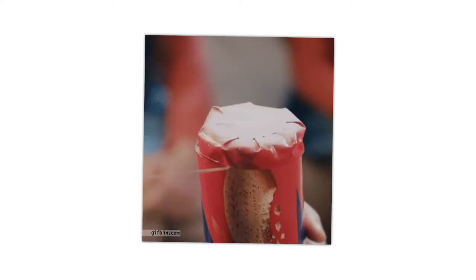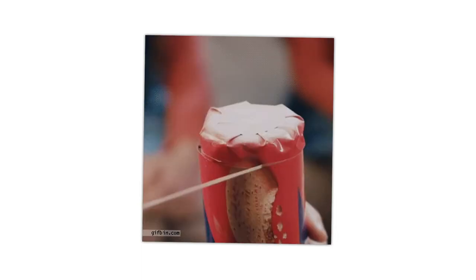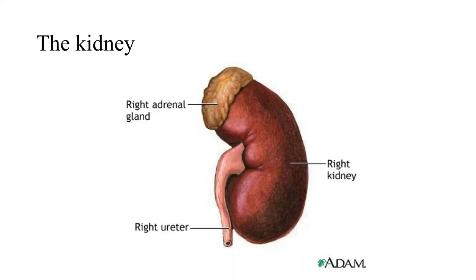Hello everybody - here is a lovely diagram to look at before we start learning about the kidney. So here we can see the kidney; this is the right one, very similar to the left. Just pop your hands on your back just above your pelvis and that's where your kidneys are. They are very rich in blood and they've got the adrenal glands sat on top, which releases adrenaline - totally separate function to the kidneys. Then we can see the ureter coming out of the bottom, leading down to the bladder. Once urine has been produced by the kidneys it gets sent down to the bladder where it's stored and then released out of the urethra.